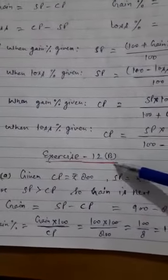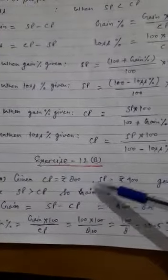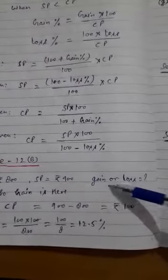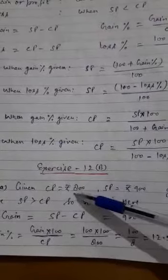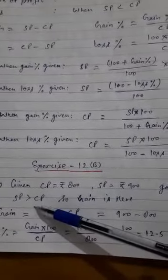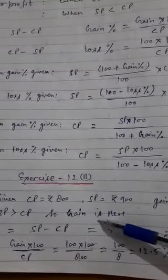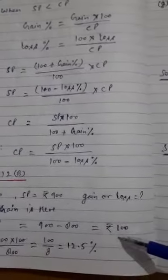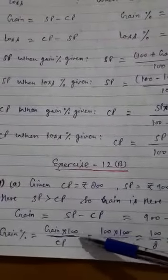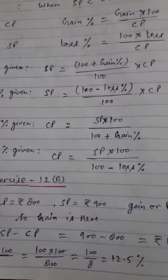Now Exercise 12B Question number 1. CP and SP are given and you have to find out the gain or loss percent. Pehle aapko pata karna hai ki loss ho raha hai ya gain. Here SP is greater than CP, so there is gain. Now gain nikalenge: SP minus CP, 900 minus 800 equals 100. Now gain percent: gain into 100 upon CP. After putting the value you will get 12.5 percent.